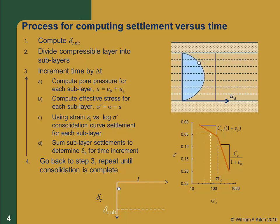At each step, we'll be able to compute a new consolidation settlement, and we continue the process until consolidation is done and we have a complete consolidation vs. time curve. We'll define the degree of consolidation U as the consolidation settlement at any given time divided by the ultimate consolidation settlement. While this is conceptually a simple process, it's computationally very tedious and can't reasonably be done by hand — it requires a computer program to accurately perform the calculations. So we need a simpler solution, which we can do with hand calculations.